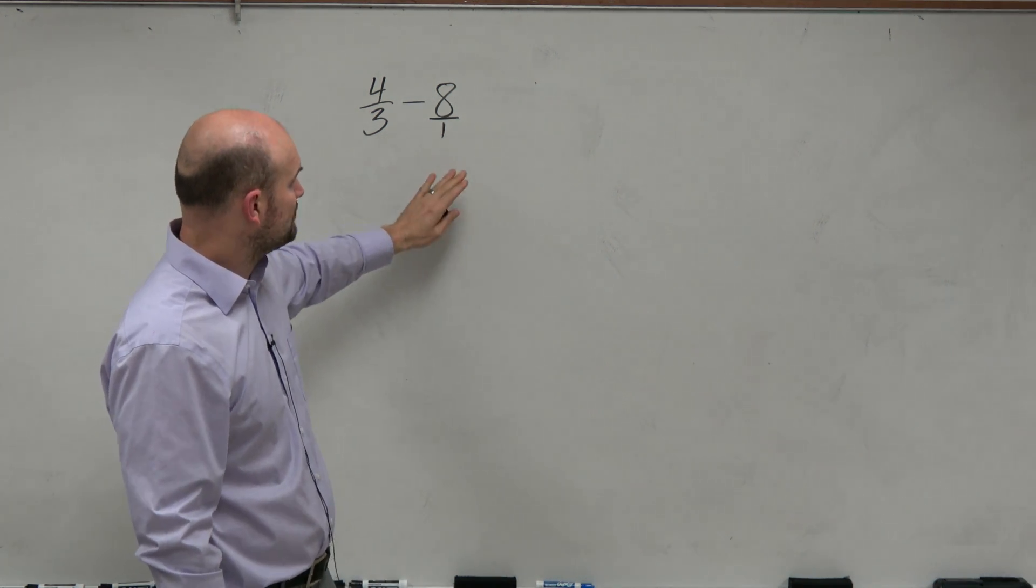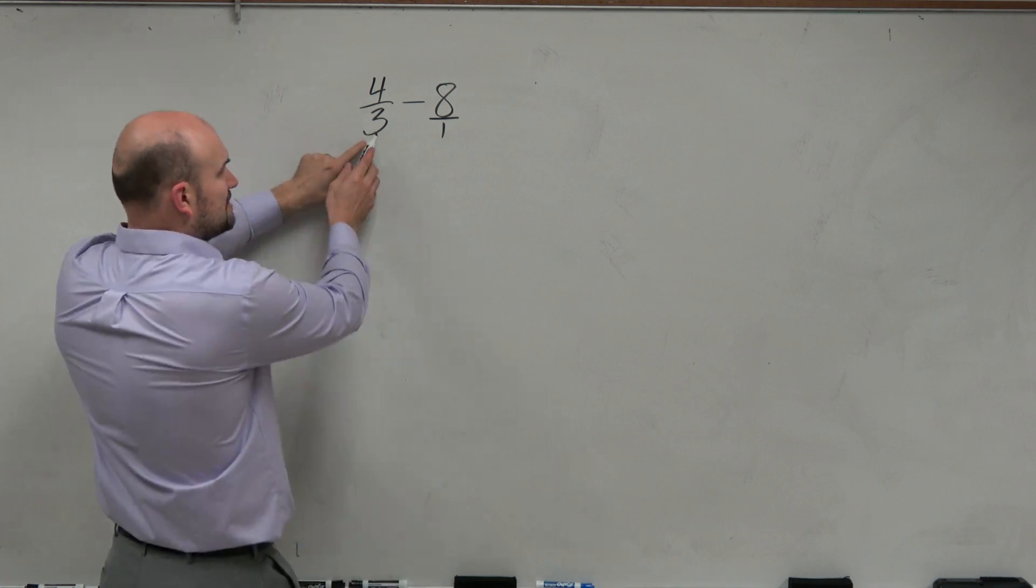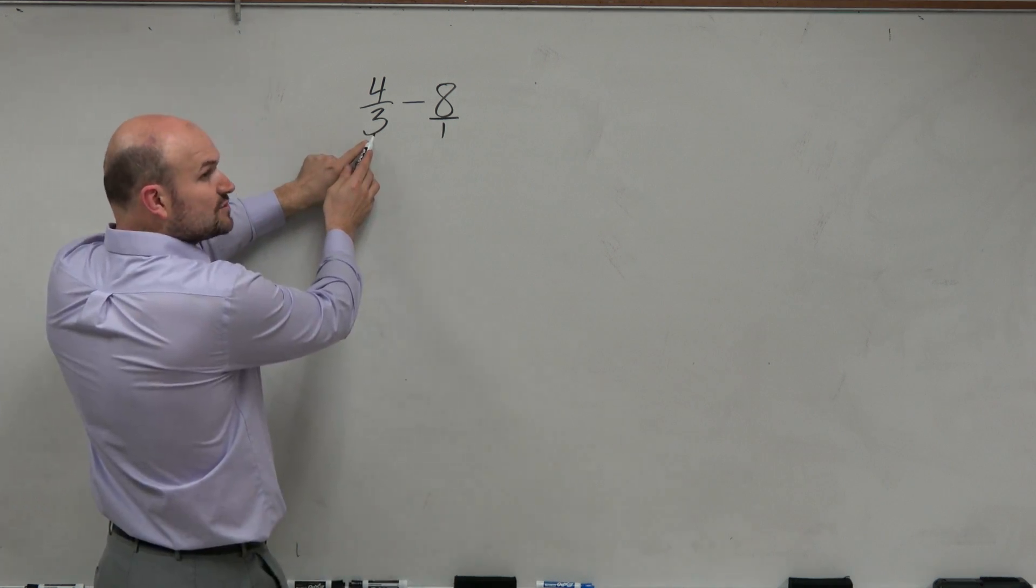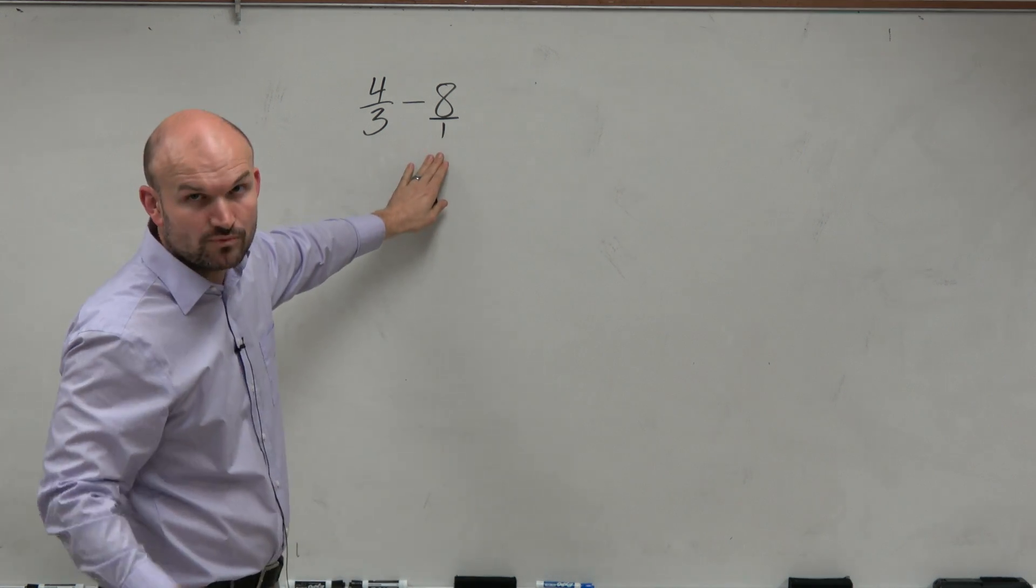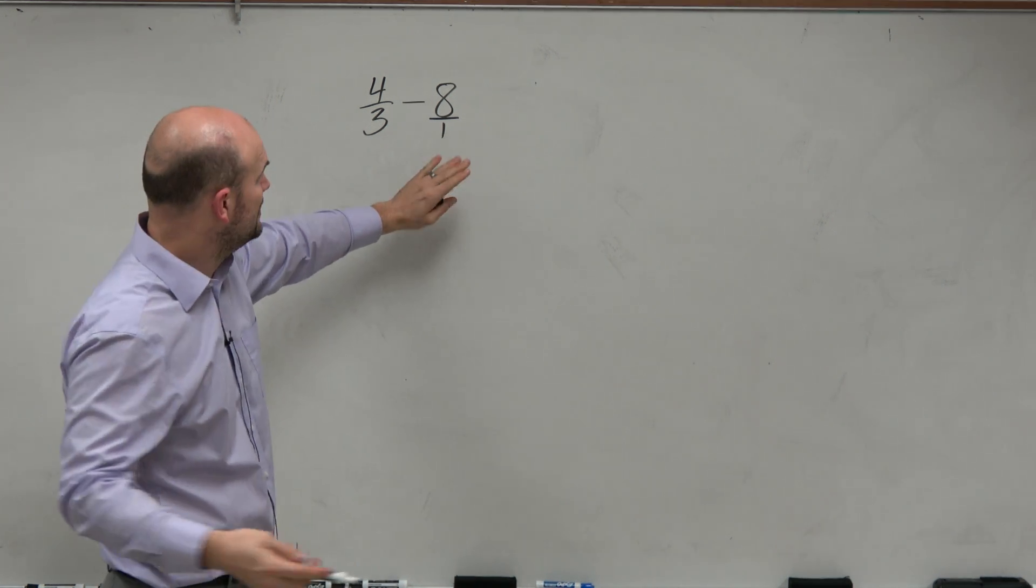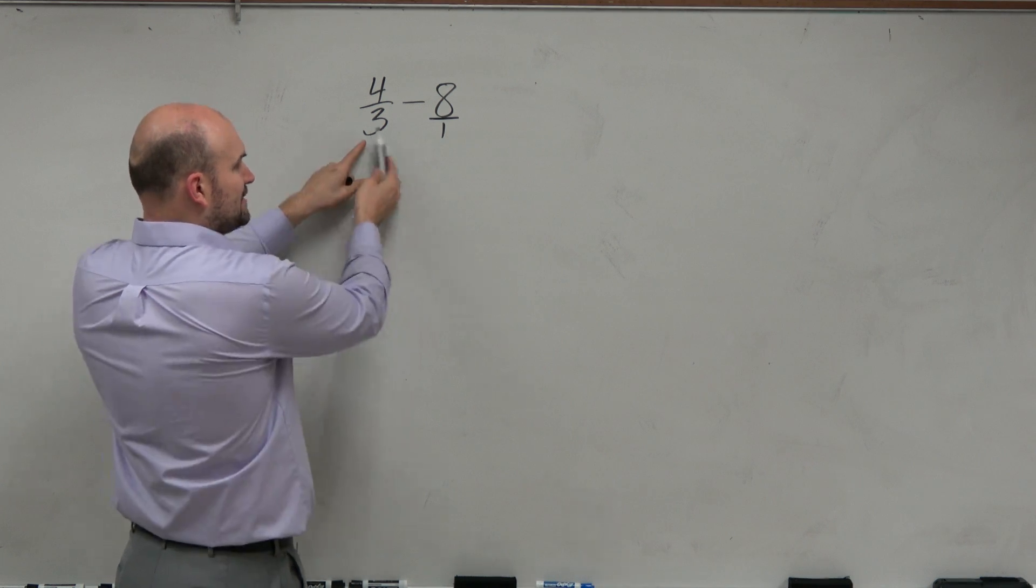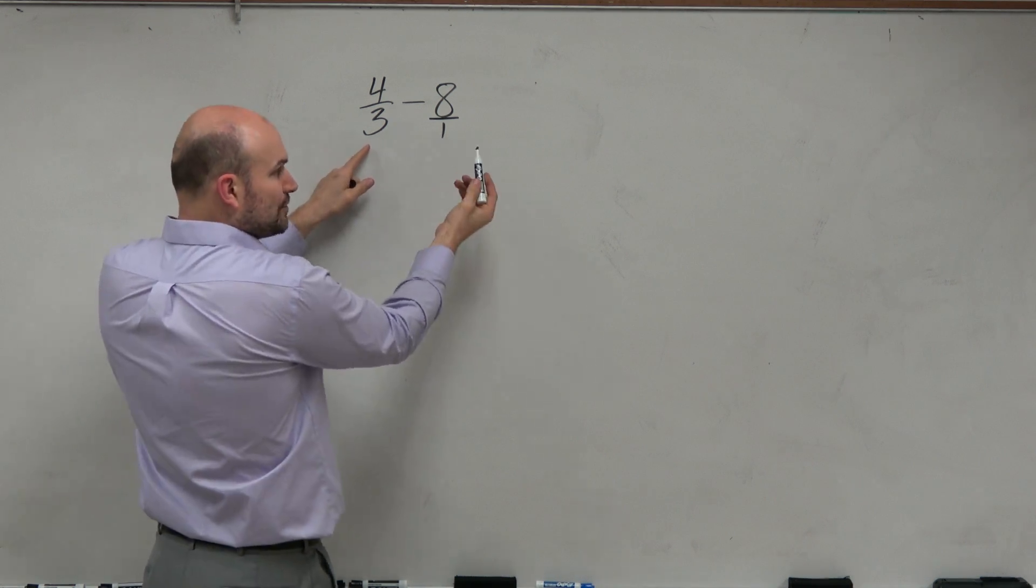And the smallest multiple that they both share, you can list out the multiples of 3: 3, 6, 9, 12, 15, 18, counting by 3s. And if you count by 1s: 1, 2, 3, 4, 5, 6, you can see that the common multiple that they share, counting by 3s or counting by 1s, is 3.